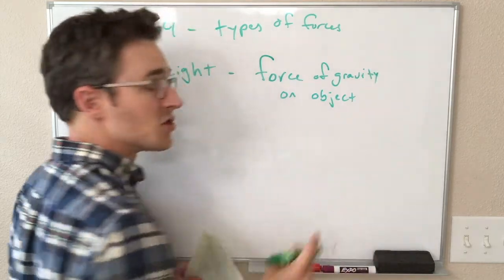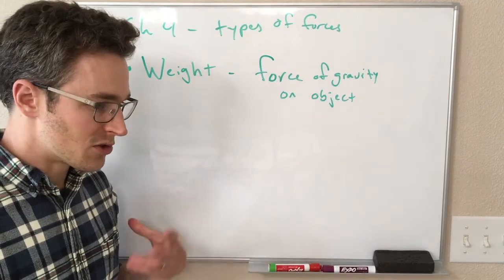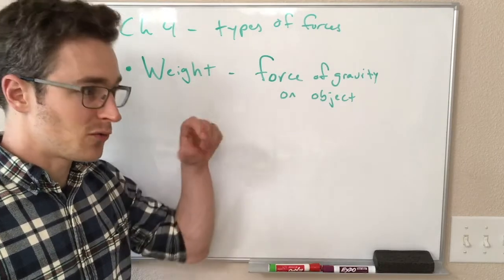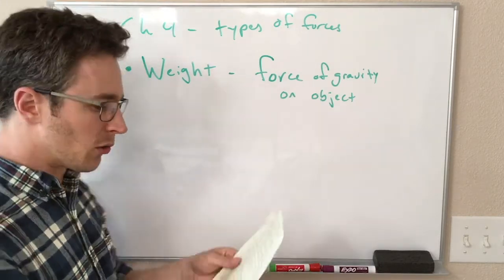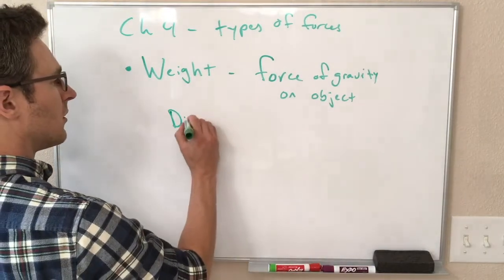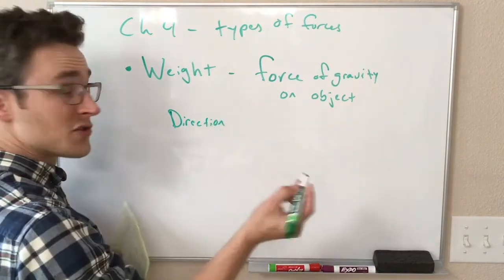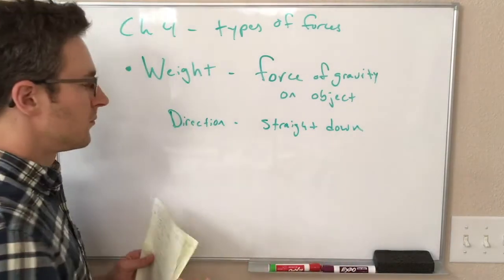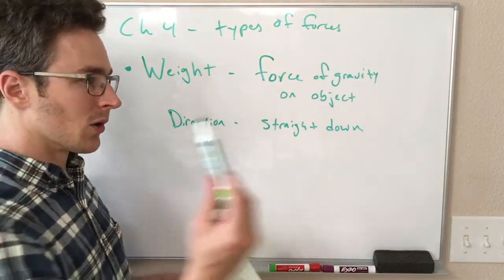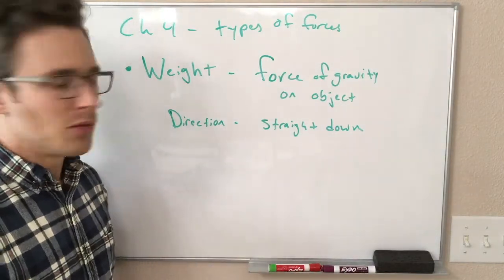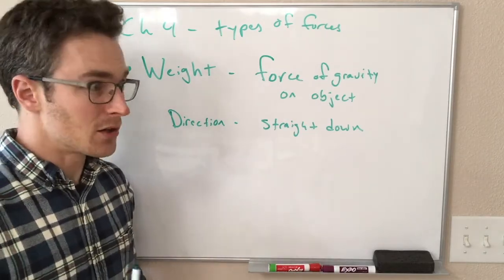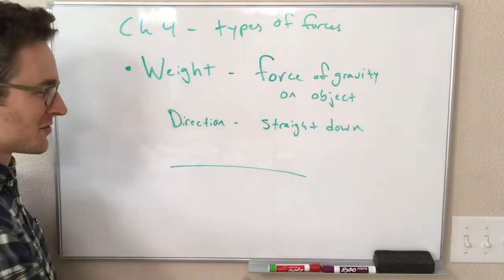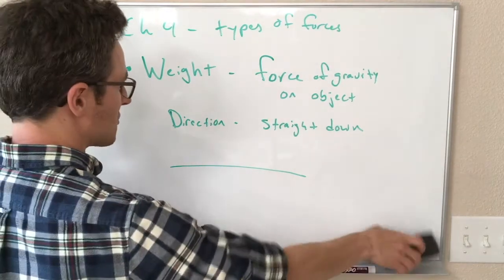Weight is the force on an object from gravity. So there is a distinction between the mass of an object, which we learned about in terms of inertia, and the weight of an object, which is a force in newtons that an object feels pulling it towards the Earth. The direction of the weight on the surface of the Earth is going to be straight down.